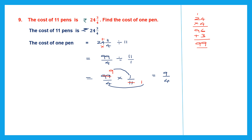9 by 4 is an improper fraction, so let's convert it to a mixed number. Divide 9 by 4: 4 twos are 8, minus we get 1. So our mixed number is 2 and 1 by 4. The cost of 1 pen — since its unit is rupees — cost of 1 pen is 2 and 1 by 4 rupees.